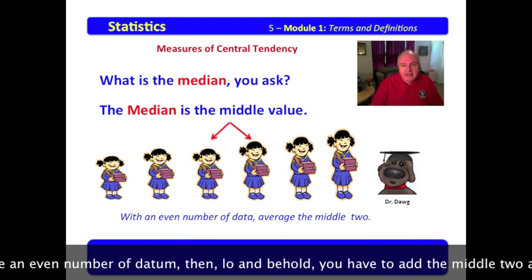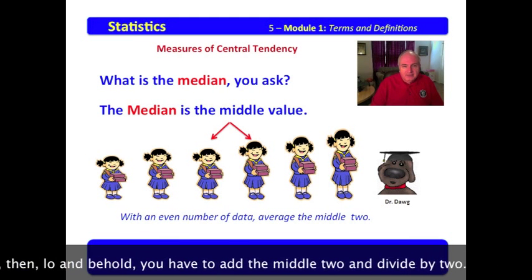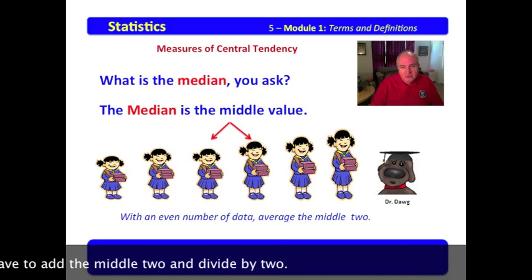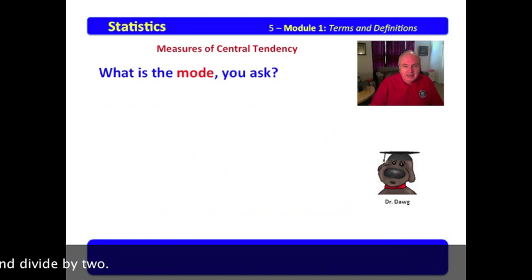But when you have an even number of datum, then lo and behold, you have to add the middle two and divide by two.